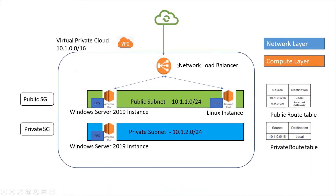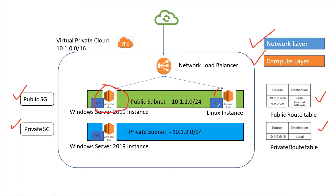This is the same diagram we created in our previous practical videos. We created a network layer, compute layer, and we have public subnet, private subnet, routing tables, and security groups — public and private security groups. You can watch previous videos to see how to create all these components. In this video, we have existing Windows and Linux instances with a web server installed, and we will create a network load balancer to balance the traffic on these instances for their web traffic.